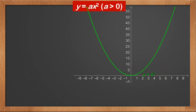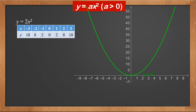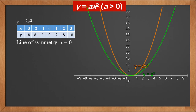Now let's look at y equals ax squared when a is positive. First, y equals 2x squared. We know it's still centered around 0, so x values remain the same. However, y values are twice as much now: 18, 8, 2, 0, 2, 8, 18. Therefore, for the same x value, this curve has a higher value and becomes this — stretched along the y axis by a factor of 2 and becomes thinner. The line of symmetry is still the y axis, and the vertex is still the origin.